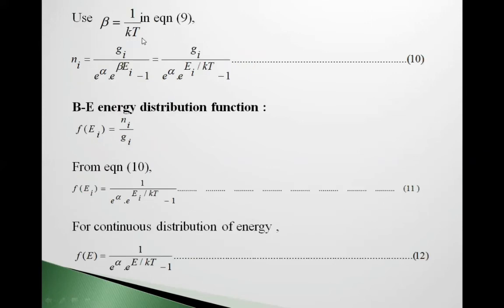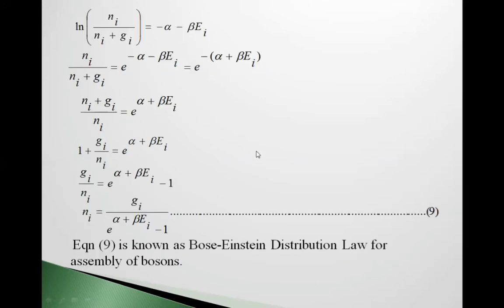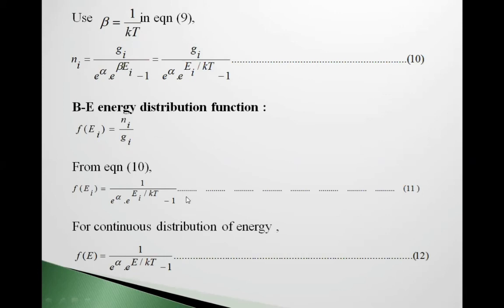Using β = 1/(kT) in equation 9, we can write Nᵢ = Gᵢ / [e^α · e^(Eᵢ/kT) − 1]. For a continuous distribution of energy, the distribution function becomes: f(E) = 1 / [e^α · e^(E/kT) − 1]. This is equation 11.